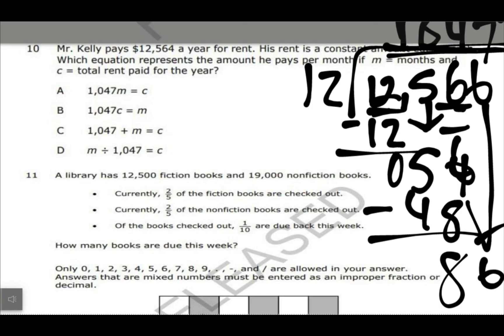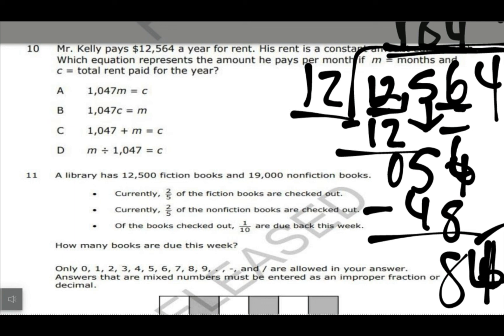Now it would be A, because we want to take this times 12, and that would give us the cost. So it'd be A, not B. So you got to be careful sometimes. This kind of looks like the same answer, but we want months, because we want to times it by 12, and that will give me the 12,564.